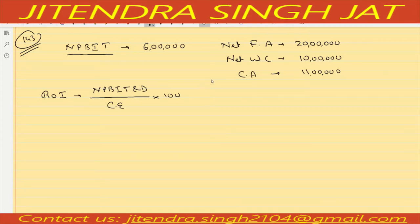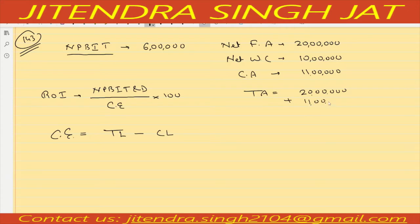To calculate capital employed, we need total assets. Net fixed asset is 20 lakh and current asset is 11 lakh, so total assets equal 31 lakh. Since total assets equal total liabilities, total liabilities are also 31 lakh. Capital employed equals total liabilities minus current liability.